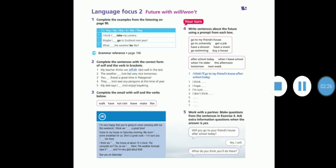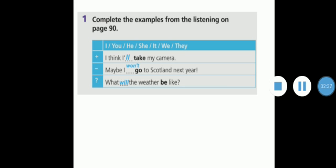Now let us move to the exercises that we have in the student book. Exercise number one: complete the examples from the listening on page 90. Here you're going to fill in the blanks whether with will or won't. You have to pay attention to the sentence type, whether it is affirmative, negative, or a question. Number one: I think I'll take my camera. I'll, which is the contracted form of I will. Maybe I won't go to Scotland next year. What will the weather be like?